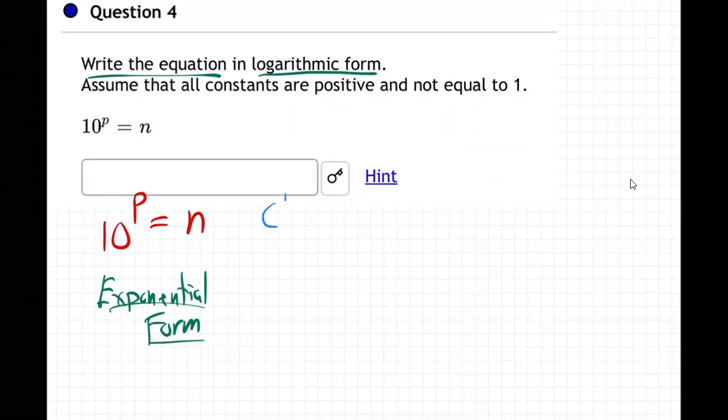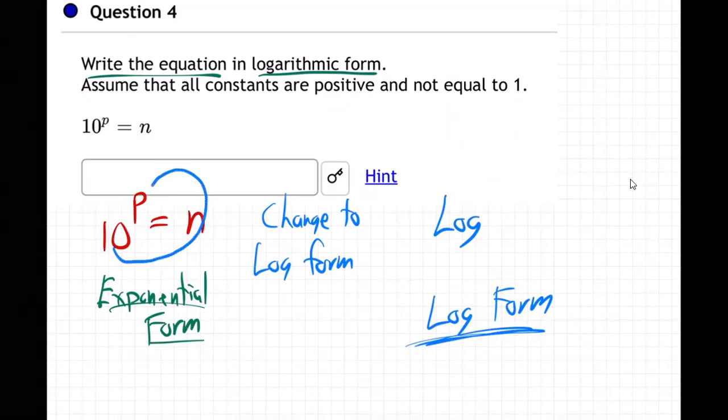So let's do that. Let's change to log form. How do we do it? We're going to bring in the log word now, because this is going to be log form. So log form has to have a log word, and then you do the switch. You go to the other side of the equal sign, and then back. So it's going to be 10 to the n equals p.